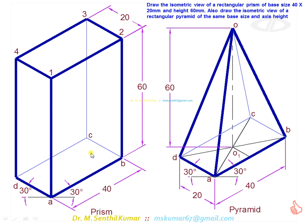These three lines are hidden. Don't darken them. Here, these two base edges and this slant edge are hidden. Don't darken them. This is the answer.